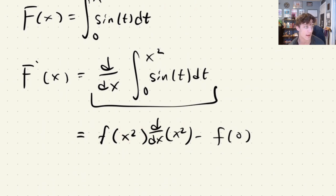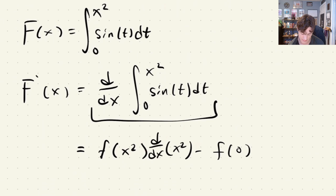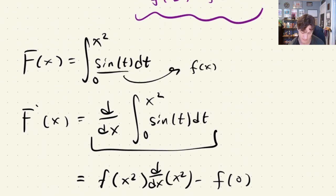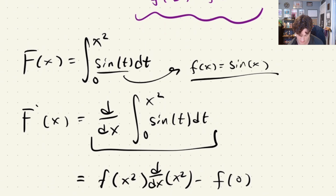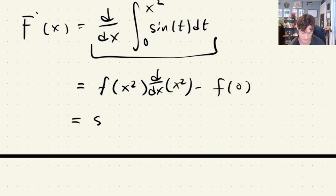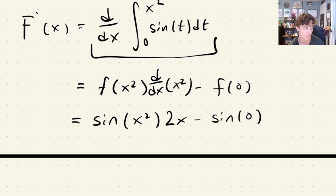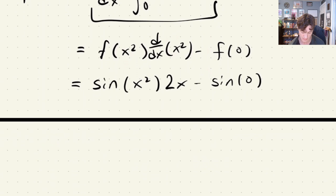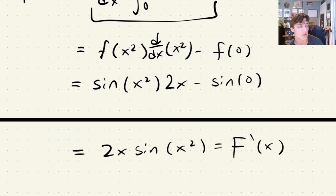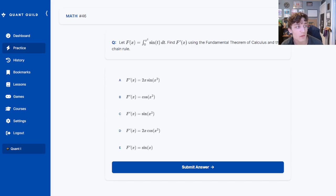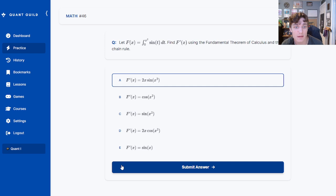This is easy to evaluate because we know that little f(x) is our integrand — little f(x) equals sine of x. So this becomes sine of x squared times the derivative of x squared, which is 2x, minus sine of 0. Sine of 0 is zero, leaving the answer as 2x·sin(x squared). That is capital F prime of x using the chain rule and the fundamental theorem of calculus.